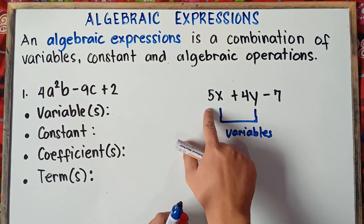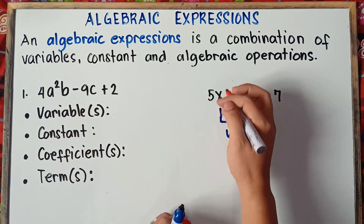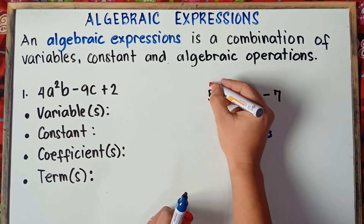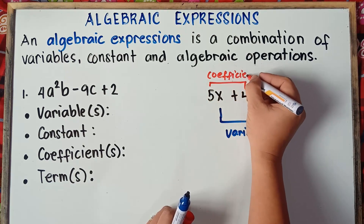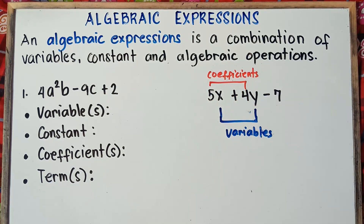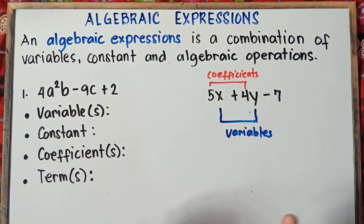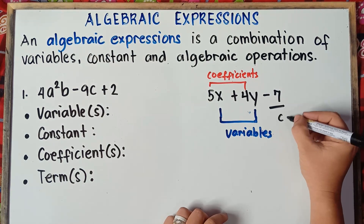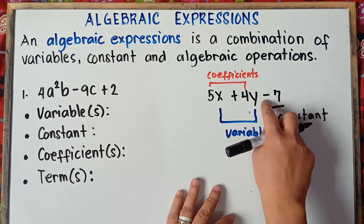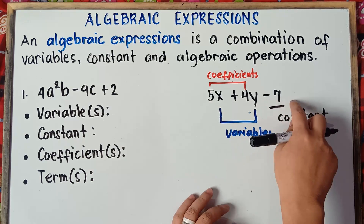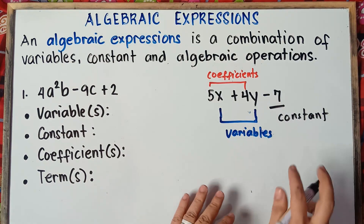The numbers that multiply the variables are called coefficients. So 5 and 4 are the coefficients. The number alone without the variable — we call that the constant. So this is negative 7, our constant. Our variables are x and y, our constant is negative 7.